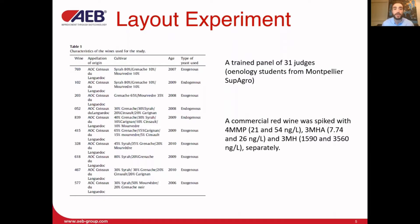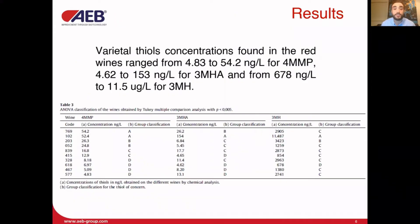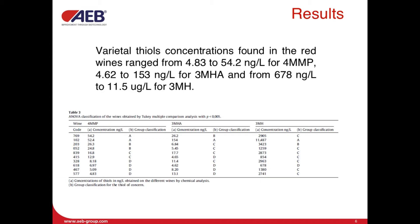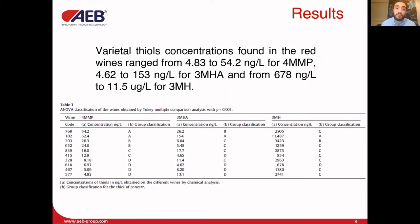Varietal thiol concentrations found in red wines ranged from around 4 to 54 nanograms per liter for 4MMP, from 4 to 150 nanograms per liter for 3MHA. The 3MH concentration instead varied from 650 nanograms per liter to 11.5 micrograms per liter. For each of these variables, wines were classified and clustered in four groups, significantly different in blackcurrant character, with increasing concentration from A to D.